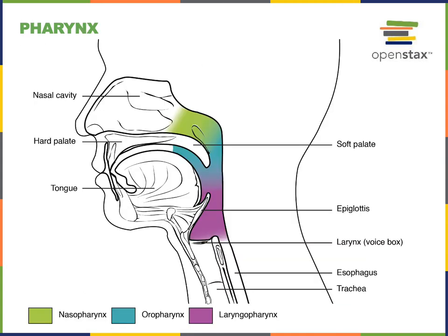This illustration shows the three regions of the pharynx. The pharynx is commonly referred to as the throat. The superior region that connects to the nasal cavity, shown in green, is the nasopharynx. The blue region in the illustration is the oropharynx that connects to the oral cavity. And the purple region is the laryngopharynx, which connects into the larynx as well as the esophagus.